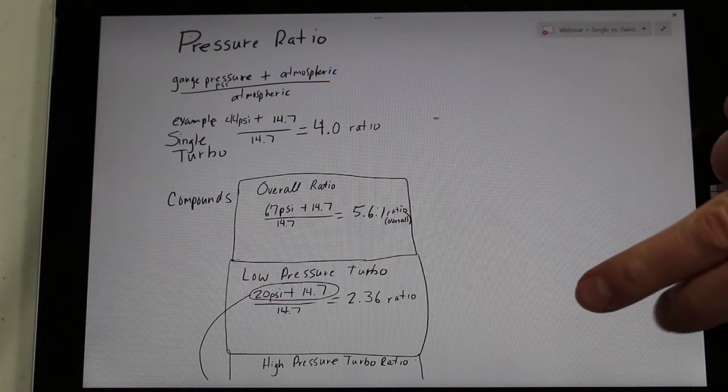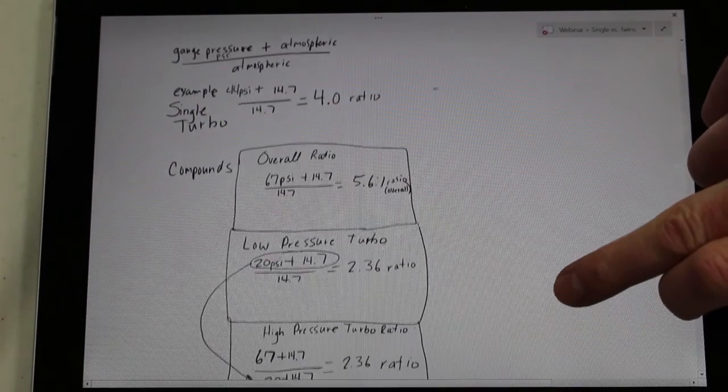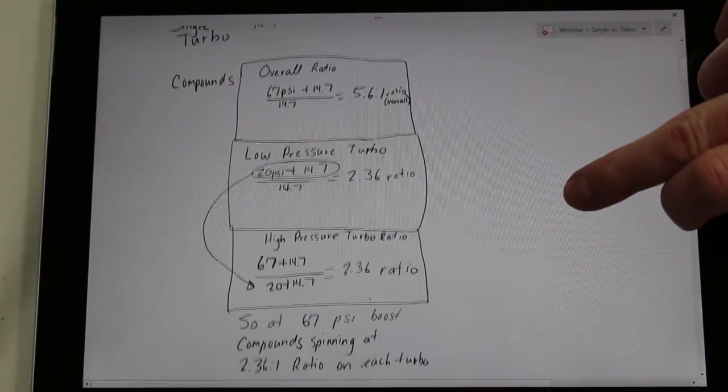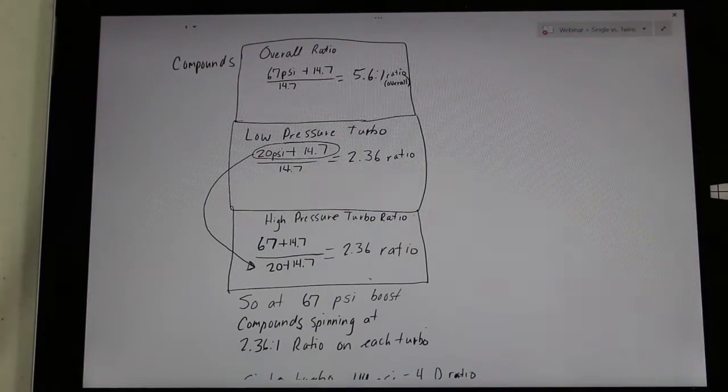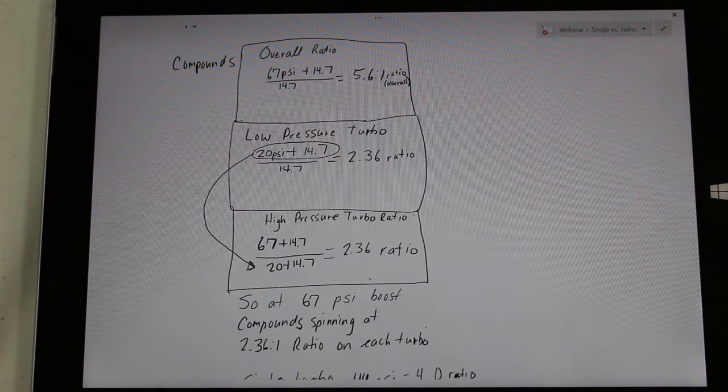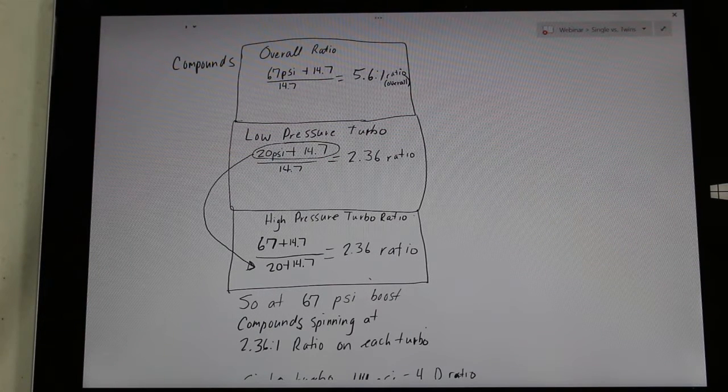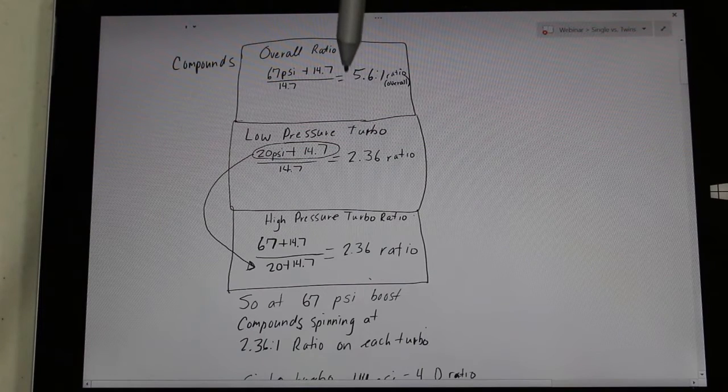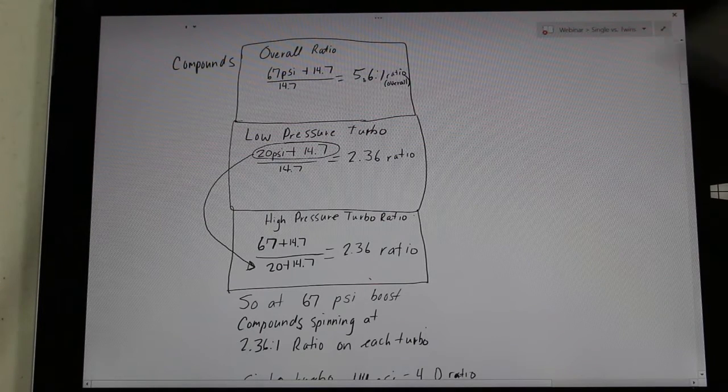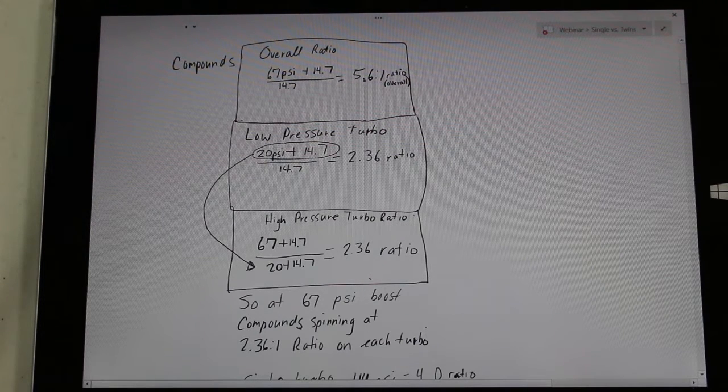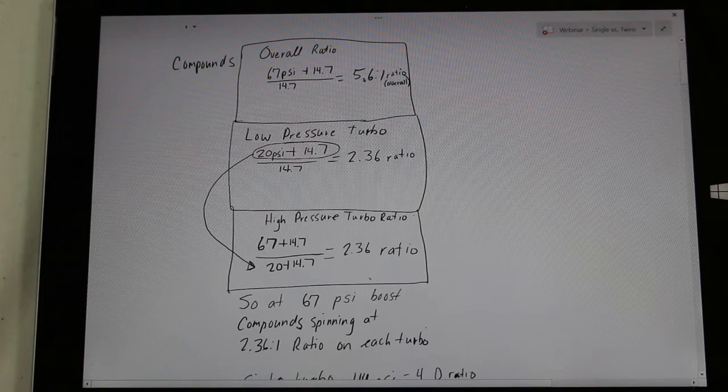The reason why is the laws of physics are on your side with compound turbos. If we take this example of a truck making 67 PSI, and that's got a set of our twins on making 67 PSI. If we run the pressure ratio overall, we're going to get 5.6 to 1 pressure ratio, which is really high.